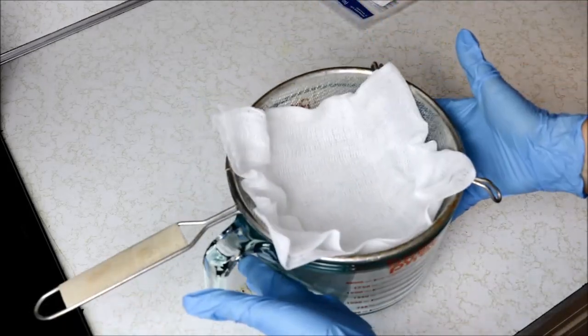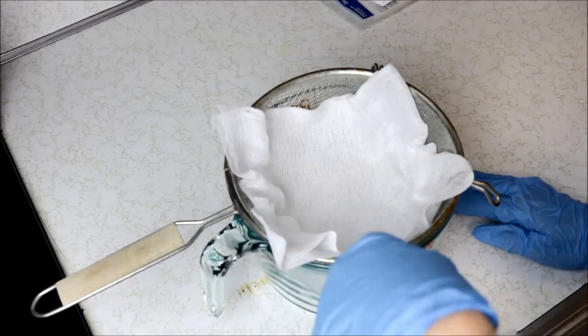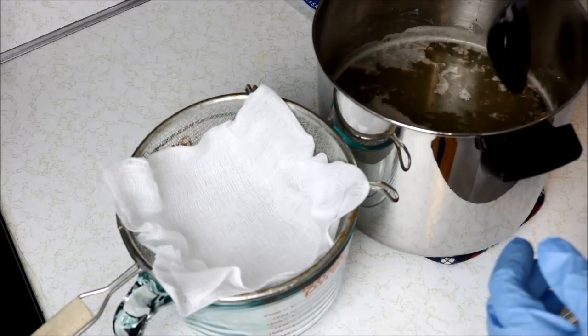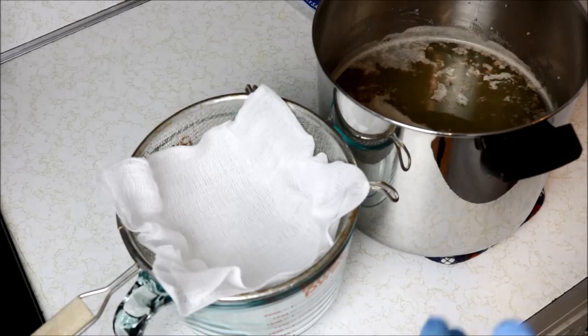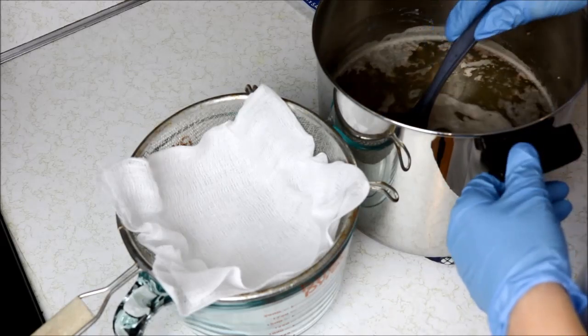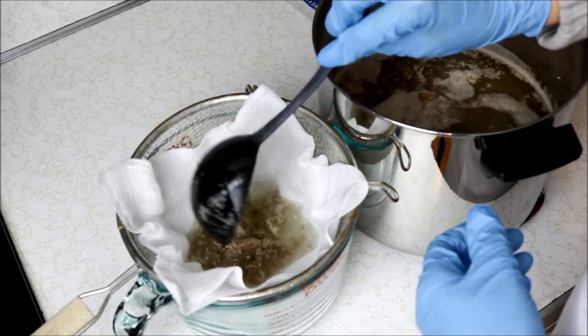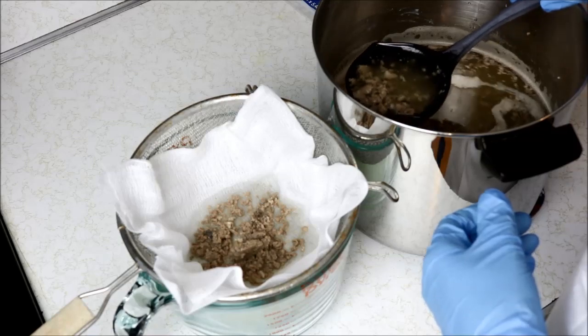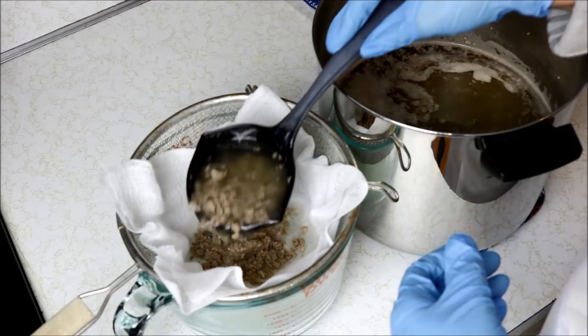So you're going to line it just like that and then we're going to ladle this fat that we melted right through that. I'm going to get rid of my spoon here and get a ladle so hopefully that works a little bit better. And then you just pour it all through this layer of cheesecloth and it's going to catch all the debris that is in that melted fat.